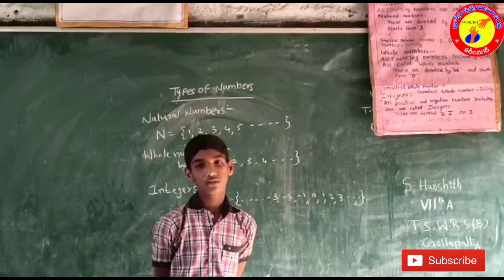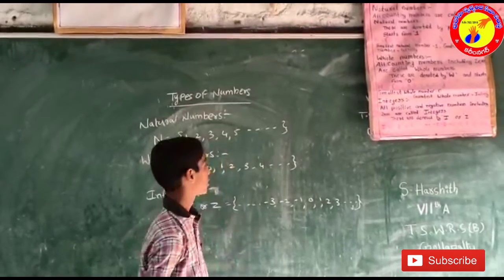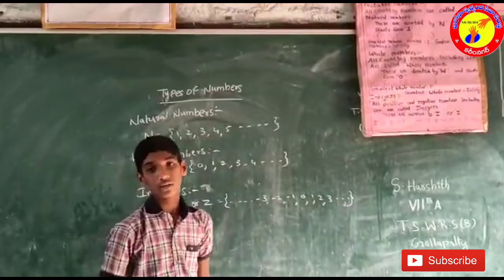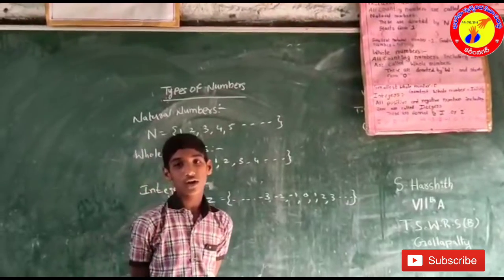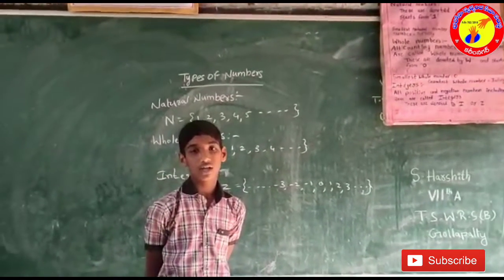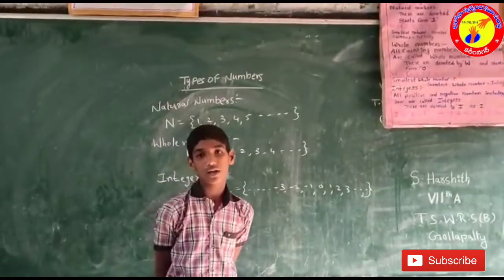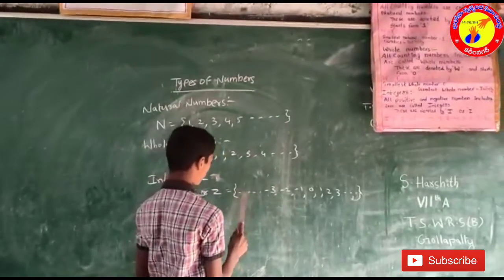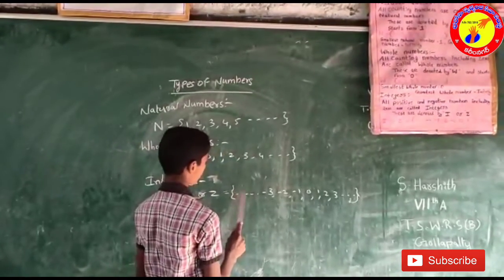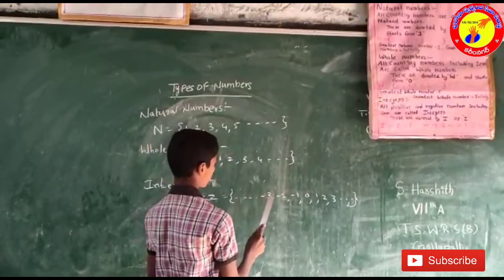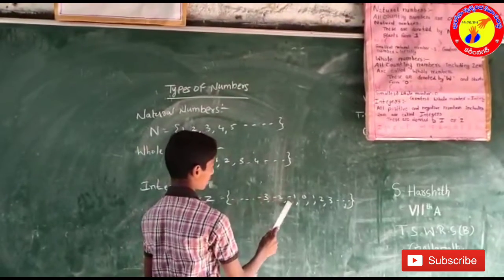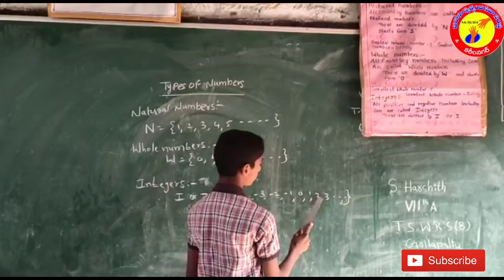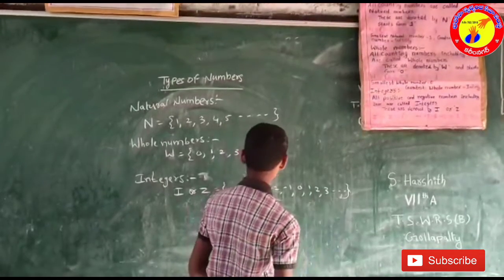We are going to learn about integers. All positive and negative numbers including 0 are called integers. These are denoted by I or Z. For example: minus 5, minus 4, minus 3, minus 2, minus 1, then 0 in the middle, and 1, 2, 3, 4, 5 like this.